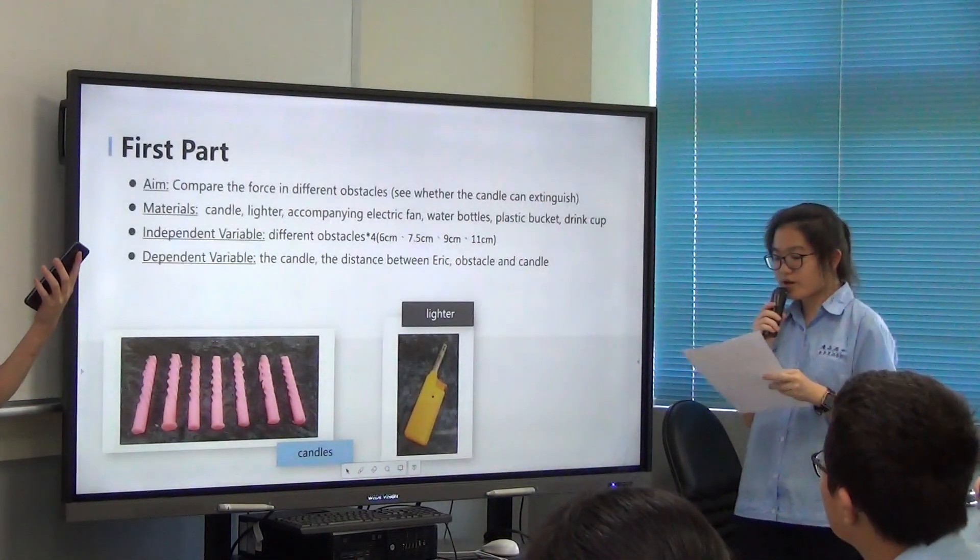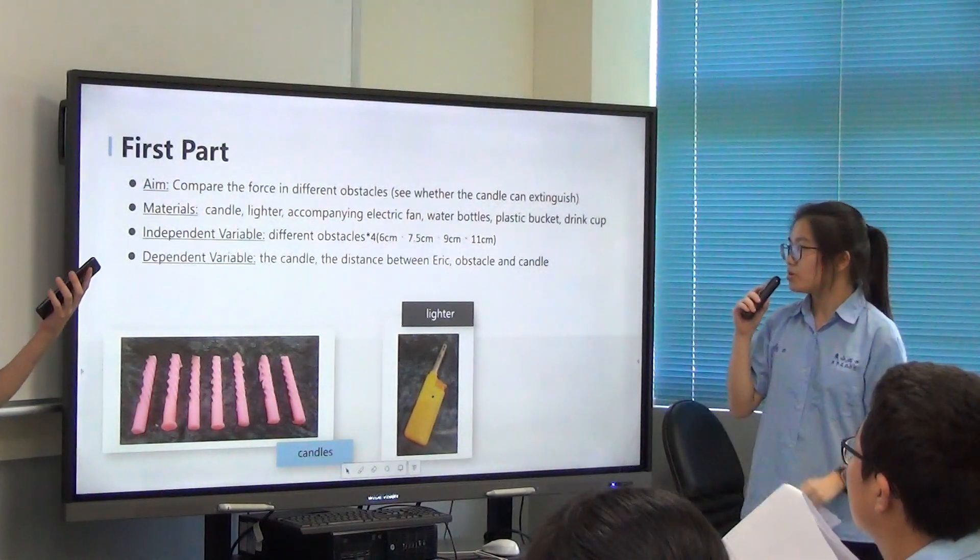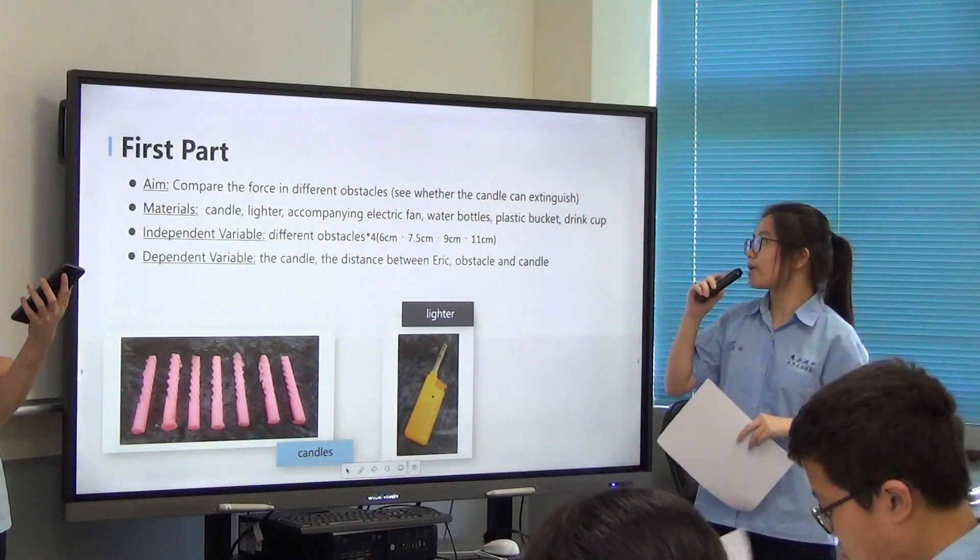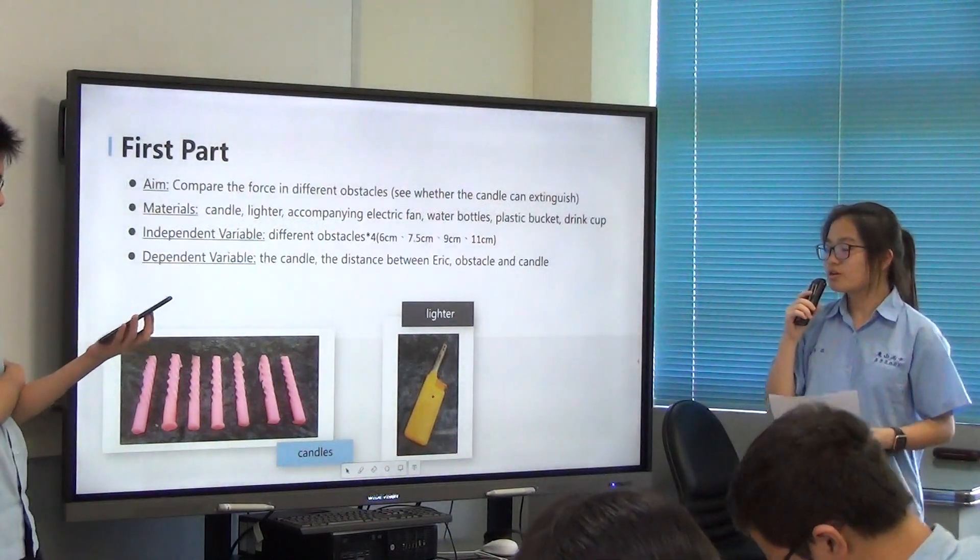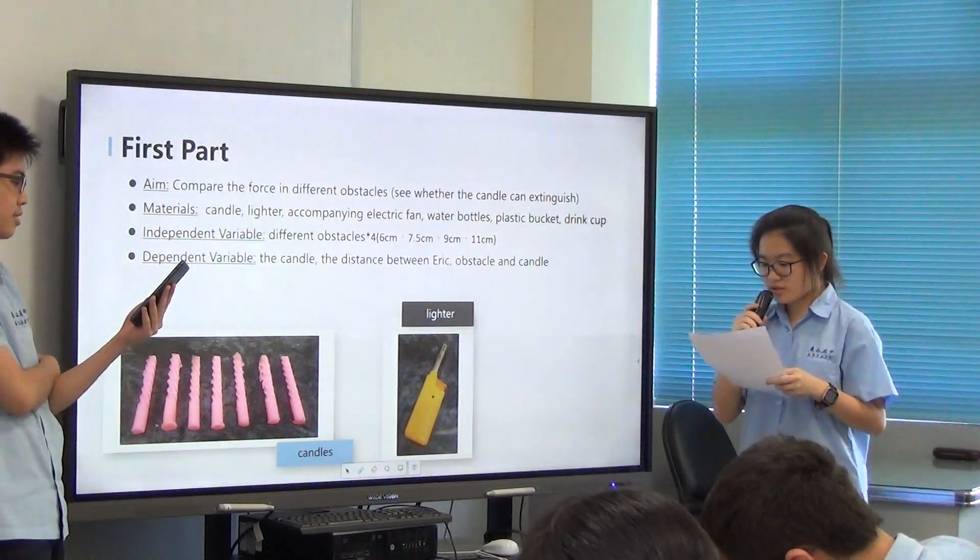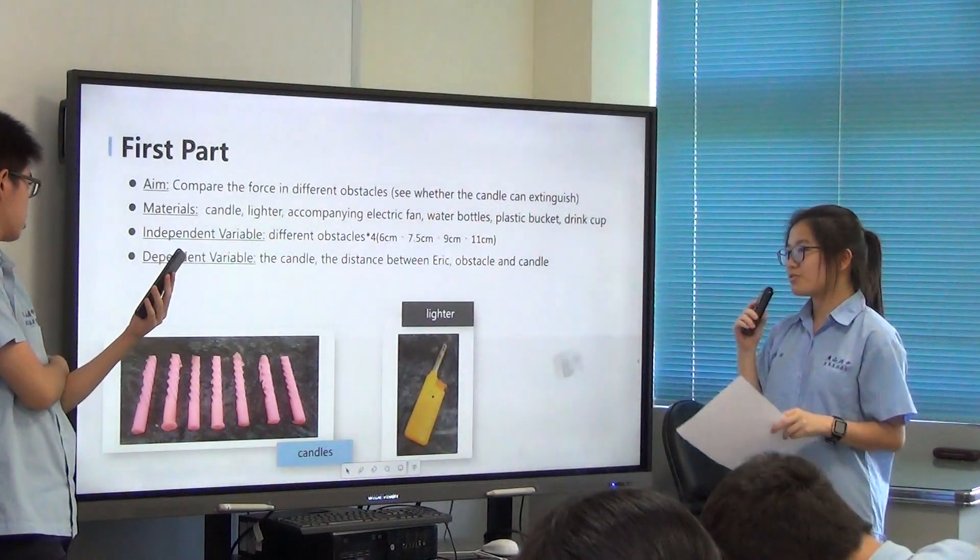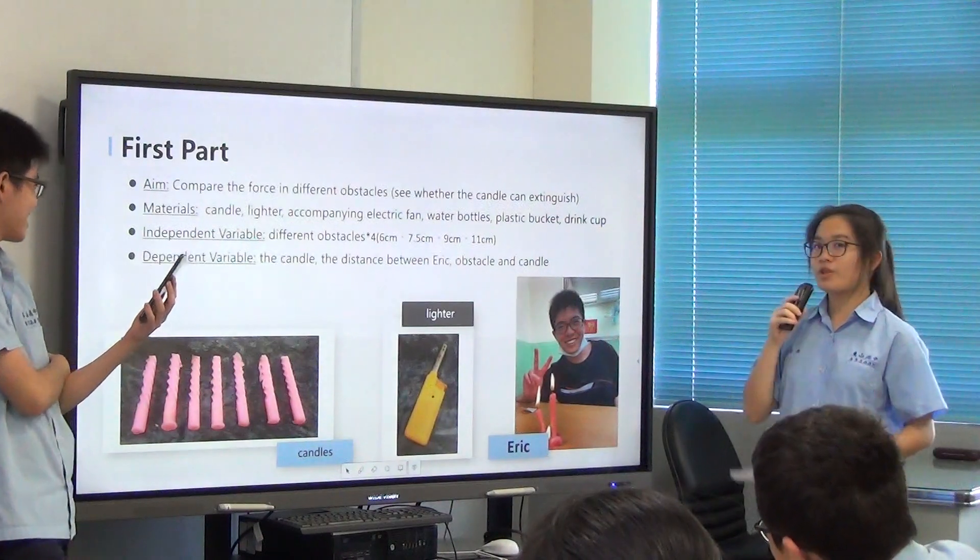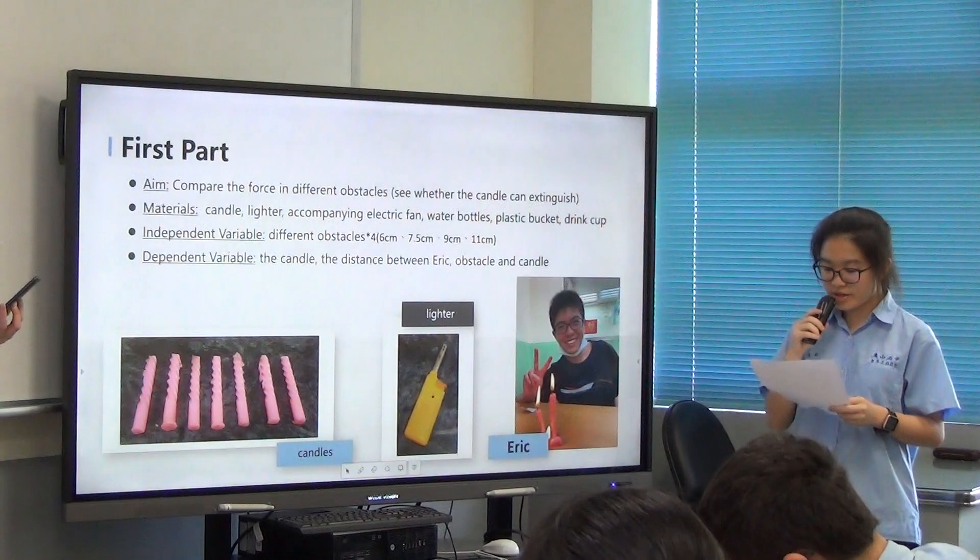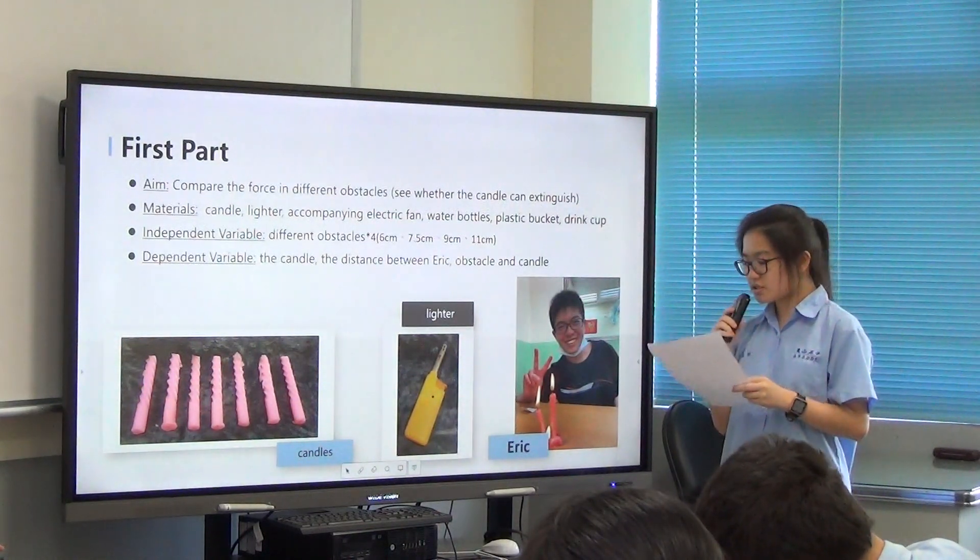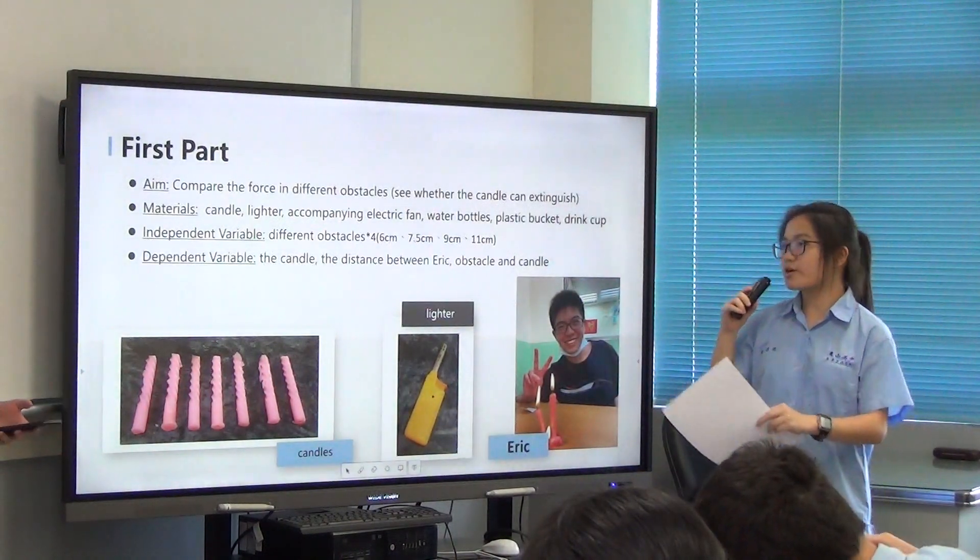So for the first part of the experiment, we want to compare the different forces between the different obstacles. So we want to see whether the candle can extinguish or not. What we compare is the candle, lighter, electric fan, water bottle, jar, plastic bottle. Eric is the one who tries to blow out the candle. And the independent variable is different obstacles, and the dependent variables are the candle and the distance between obstacle and candle.